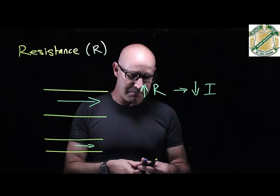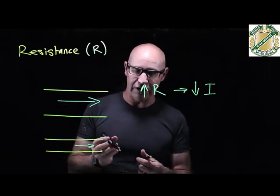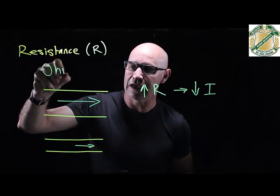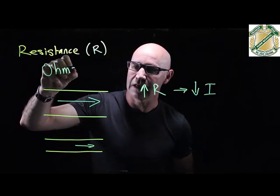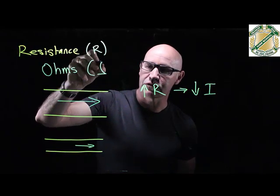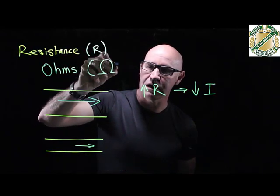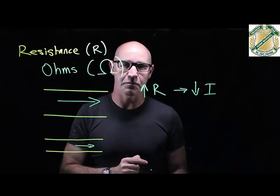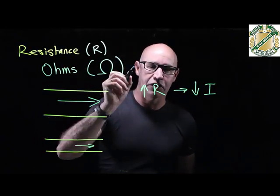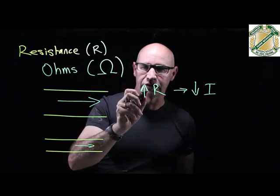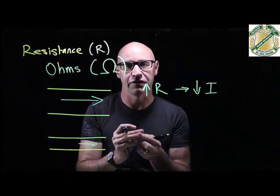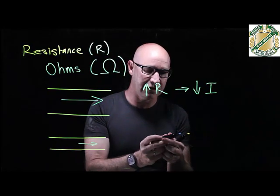We measure resistance in something called ohms — O-H-M-S — and the symbol is this here, which is omega, the Greek letter omega. So ohms is the measure of resistance, and resistance is the amount that a material resists the flow of electricity.